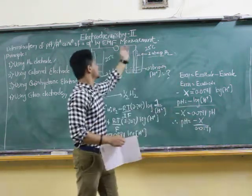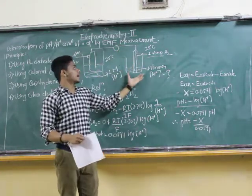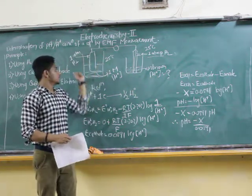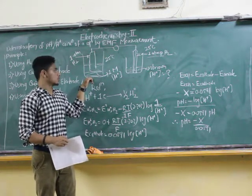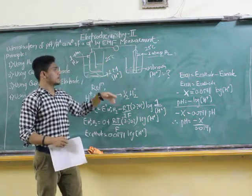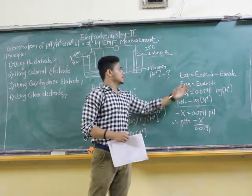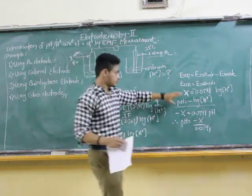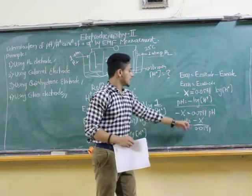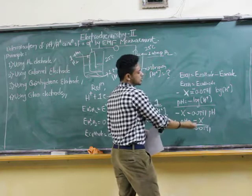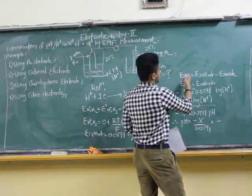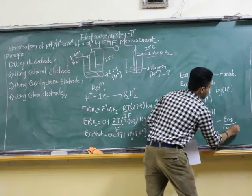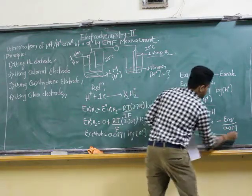X is nothing but the E of cell which we get from the experiment. I had a cell whose pH I wanted to determine. I took the reference electrode — the standard hydrogen electrode (SHE) — and compared the two. I got E of cell from the experiment, used the Nernst equation with E of anode = 0 for SHE, and determined pH = −E(cell) / 0.0591. This is the pH of that solution.